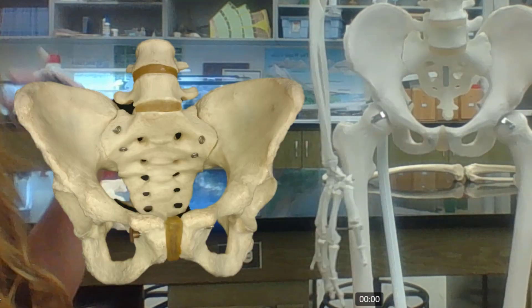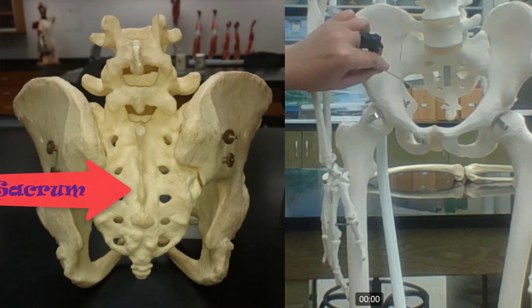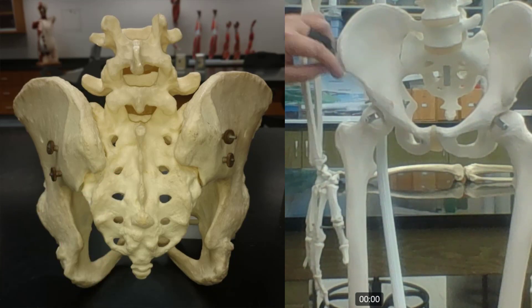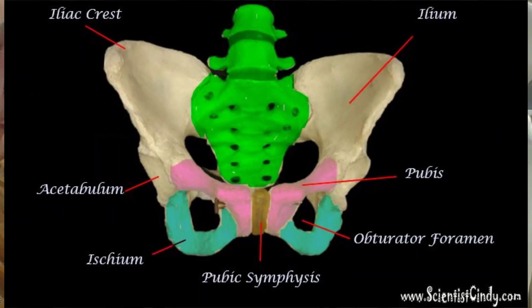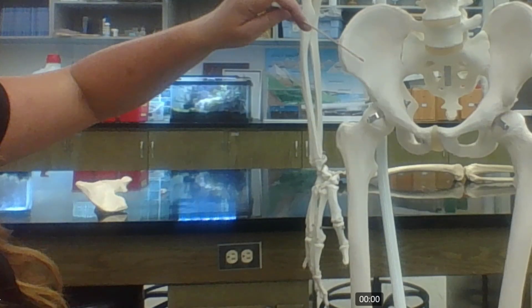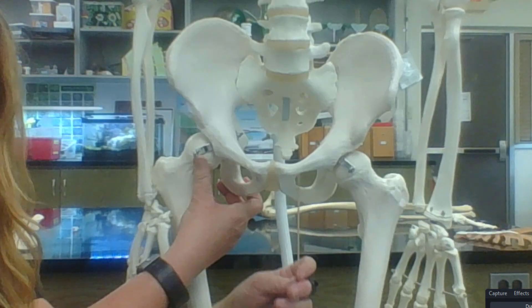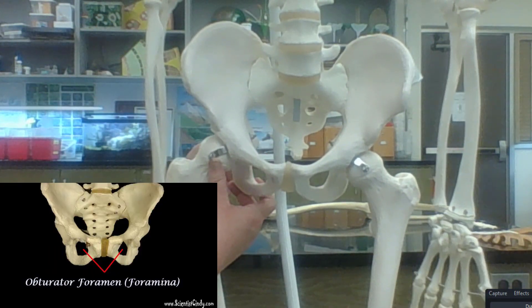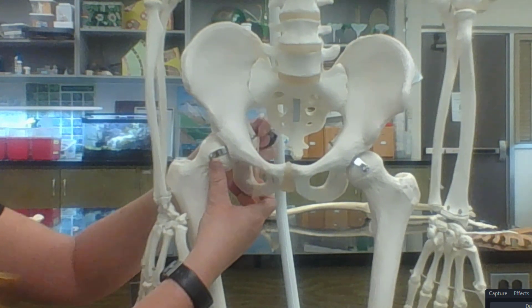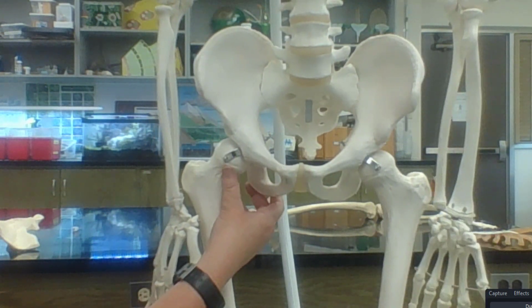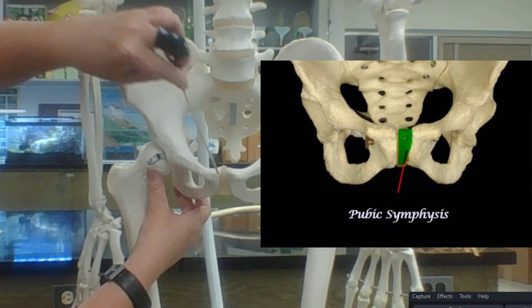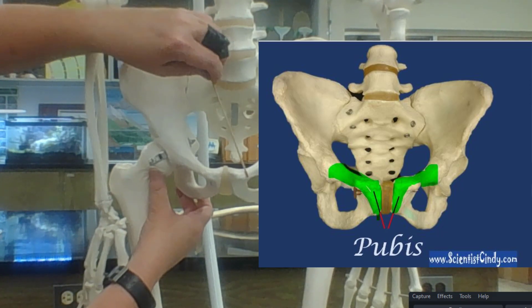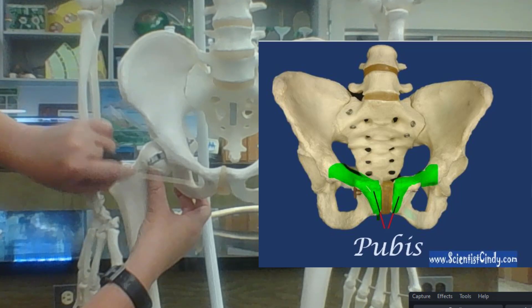The pelvic girdle is made up of the sacrum, the coccyx, and the two hip bones (also known as os coxae or pelvic bones). The hip bones are formed by the fusion of three bones. The large areas are the ilium. The two holes visible are the obturator foramina (singular: foramen). The point where the two hip bones come together anteriorly is the pubic symphysis, and the pubic bone (pubis) is the area around that symphysis.